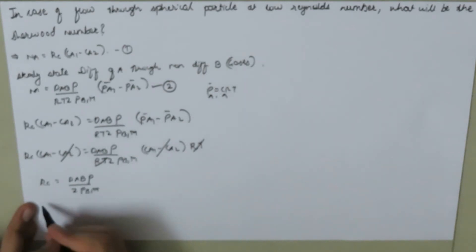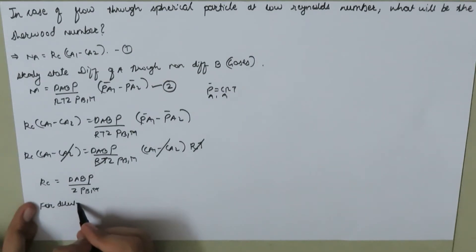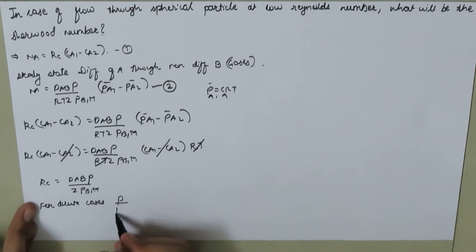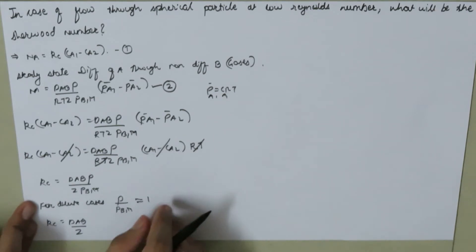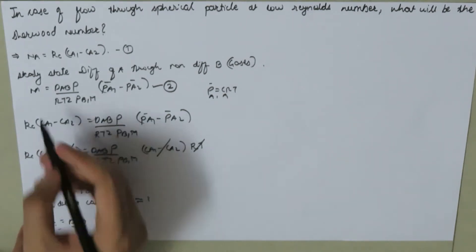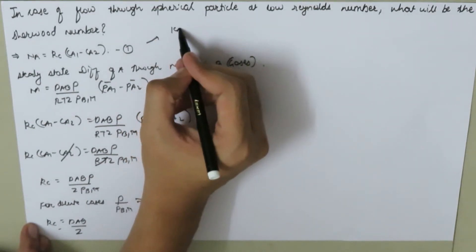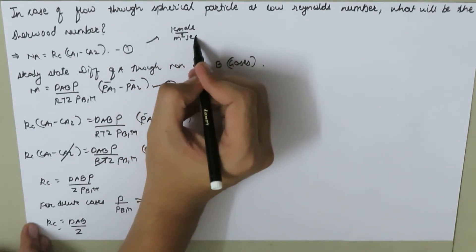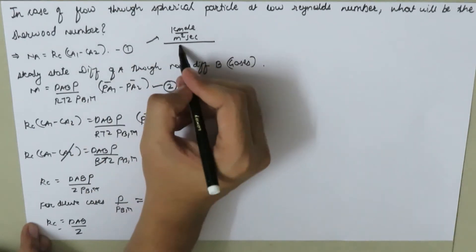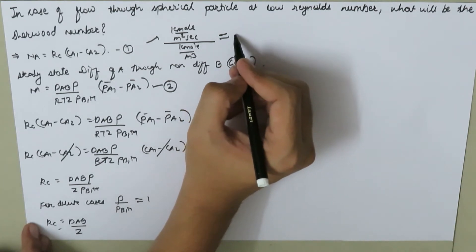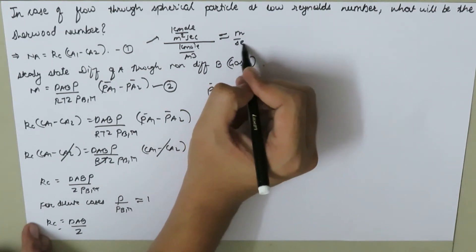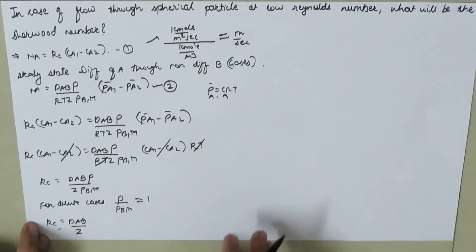For dilute cases, P over PBM is taken as unity, so we are left with Kc equal to DAB over Z. If we look closely at the dimensions of this mass transfer coefficient Kc — NA is in kmol per meter squared per second, divided by concentration in kmol per meter cubed — the dimensions of Kc equal meters per second, which is equivalent to the dimensions of velocity.